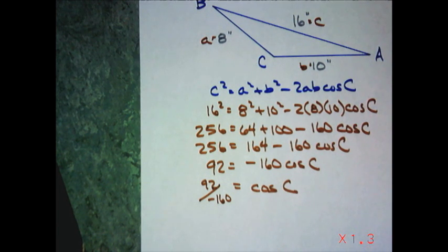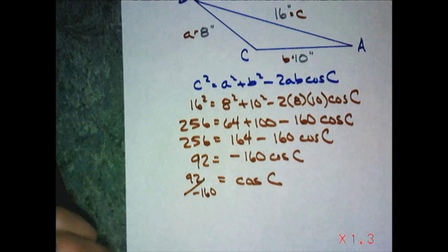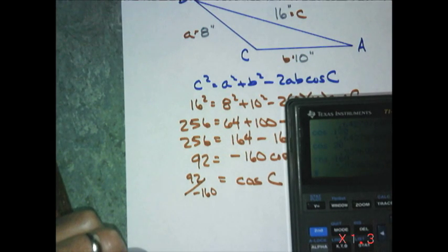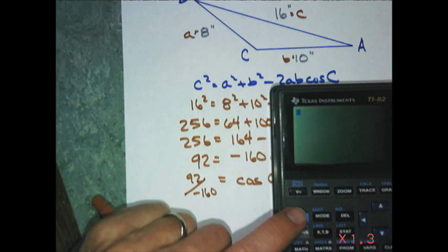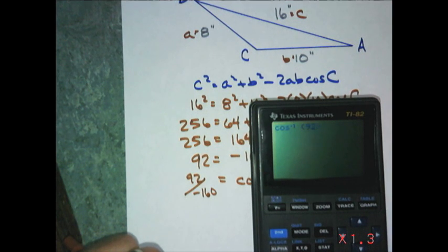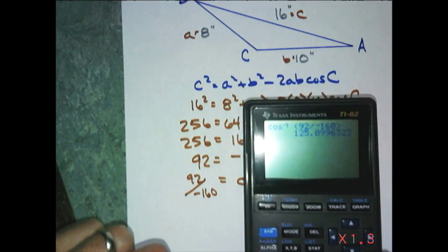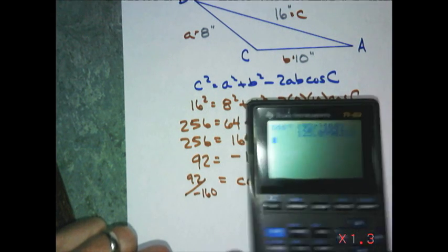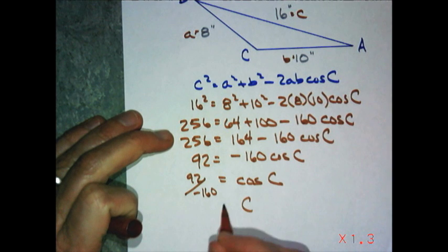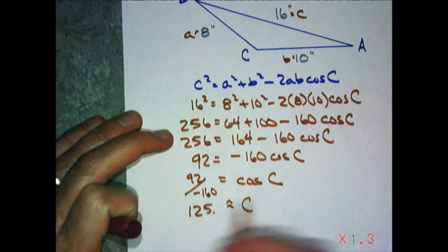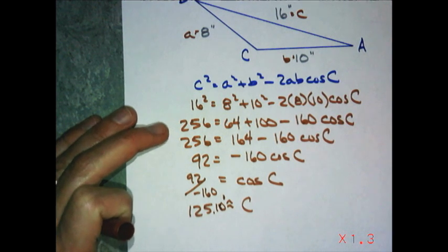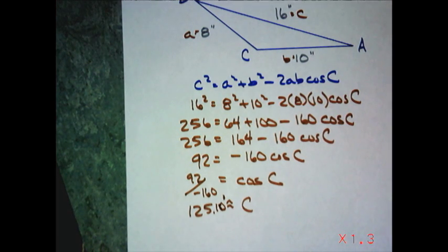Now I get out my calculator. Using arc cosine — also known as inverse cosine — of the relationship 92 divided by negative 160, it gives me an angle of approximately 125.099 degrees. So C is approximately 125 degrees and 10 hundredths of a degree.